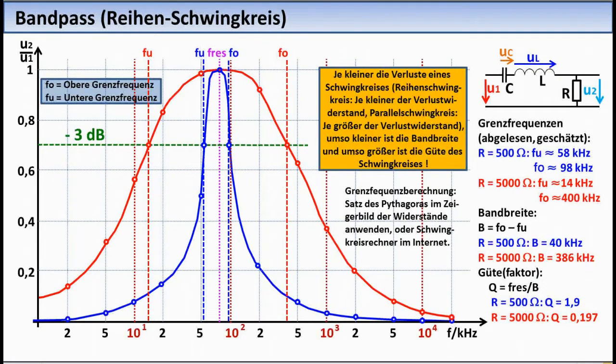A resonant circuit with the lower losses can therefore filter out a frequency, namely the resonant frequency, from a multitude of frequencies much better than the one with the higher losses. The quality of a resonant circuit is described by the quality or quality factor Q, and this results from F resonance or F0 divided by B, by the bandwidth. And from this formula you can also see: the smaller the bandwidth in relation to the resonant frequency, the greater the quality, and the better or more selective the resonant circuit is. The cutoff frequencies can of course also be calculated. The formulas are relatively complex, however, and the reading method normally offers sufficient accuracy.